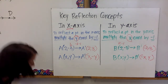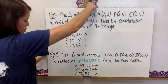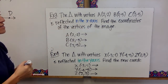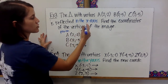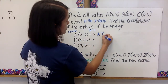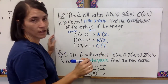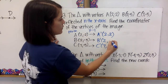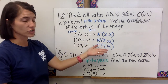Now we're going to try it without graphing. A triangle with vertices is reflected in the x-axis — find the coordinates of the vertices of the image. Since it's the x-axis, we need to multiply the y-coordinate by negative 1. The x-coordinates of A prime, B prime, and C prime are all going to stay the same. The y-coordinate we multiply by negative 1: negative 2 times negative 1 is 2, negative 5 times negative 1 is 5. So those are our coordinates for the image — the new transformed shape — without having to graph it.